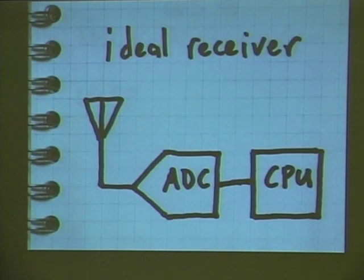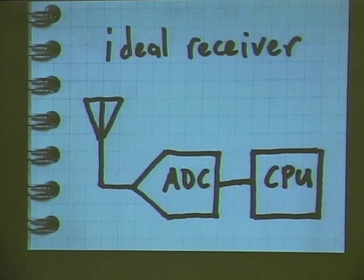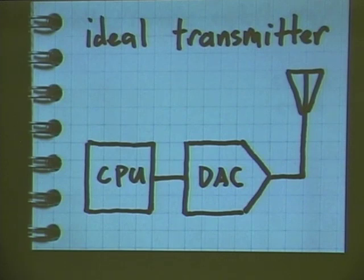Like modems, radio started out in the analog domain, became digital as DSP became more viable, and radios are becoming more software-defined every day. To build a software radio, you'd have an antenna, immediately hook it to an analog-to-digital converter and digitize the radio signal directly, feed the resulting samples into a processor, and run whatever algorithms you need to demodulate WiMAX or Bluetooth or whatever technology you're interested in.